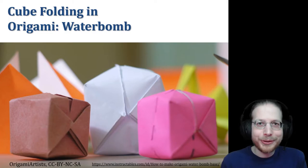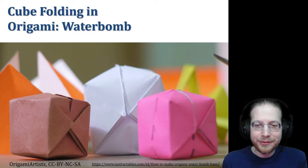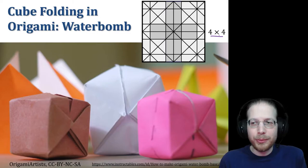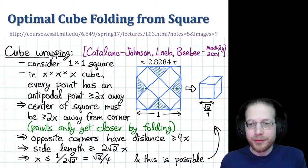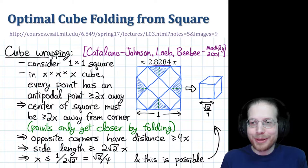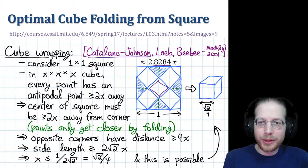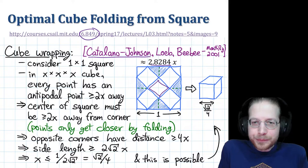So cube folding is very popular in origami. One of the most famous designs, hundreds of years old at least, is the water bomb. Maybe you've made one. But it turns out that folding is not particularly efficient. It takes a 4x4 square and folds it into a 1x1x1 cube. Can you do better?